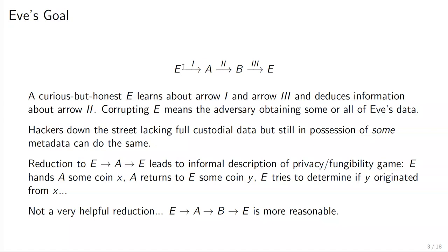If Eve is watching these transactions, the diagram looks like this: Alice buys from Eve, purchases something from Bob, and Bob deposits at Eve. Arrows one and three — if Eve is a KYC exchange keeping an eye on her transactions — she can de-anonymize those pretty well. She'll learn a lot about Alice's and Bob's addresses, and since she knows about arrows one and three, she knows quite a bit about these transactions.